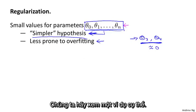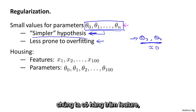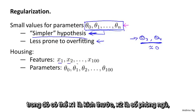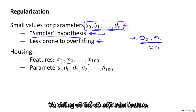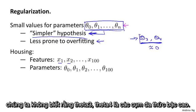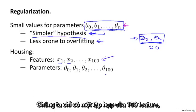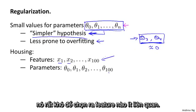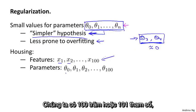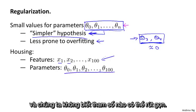Let's look at the specific example. For housing price prediction, we may have our 100 features that we talked about, where maybe x1 is the size, x2 is the number of bedrooms, x3 is the number of floors, and so on. And we may have 100 features. And unlike the polynomial example, we don't know which are the high-order polynomial terms. So if we have just a set of 100 features, it's hard to pick in advance which are the ones that are less likely to be relevant. We have 100 or 101 parameters, and we don't know which ones to pick, we don't know which parameters to pick to try to shrink.